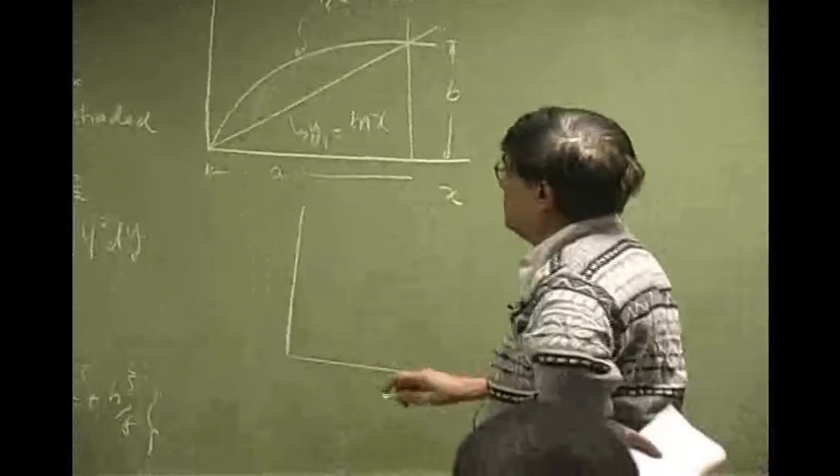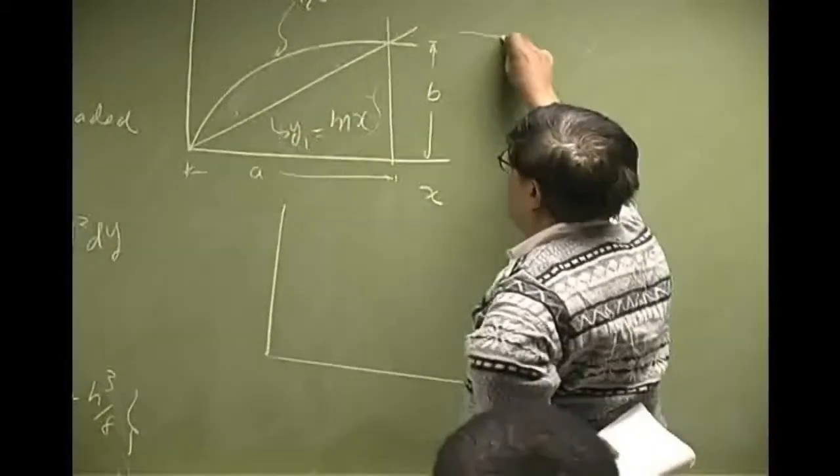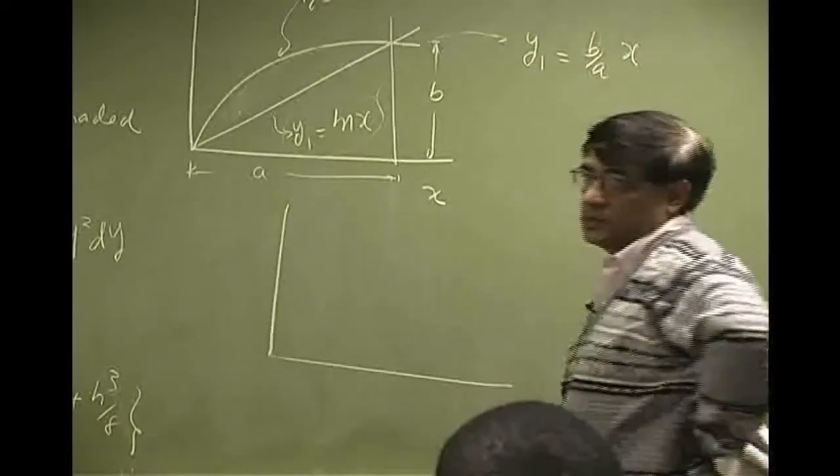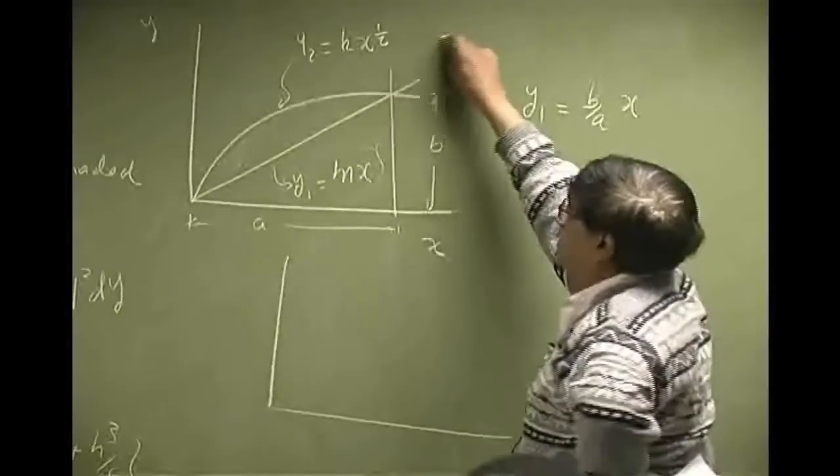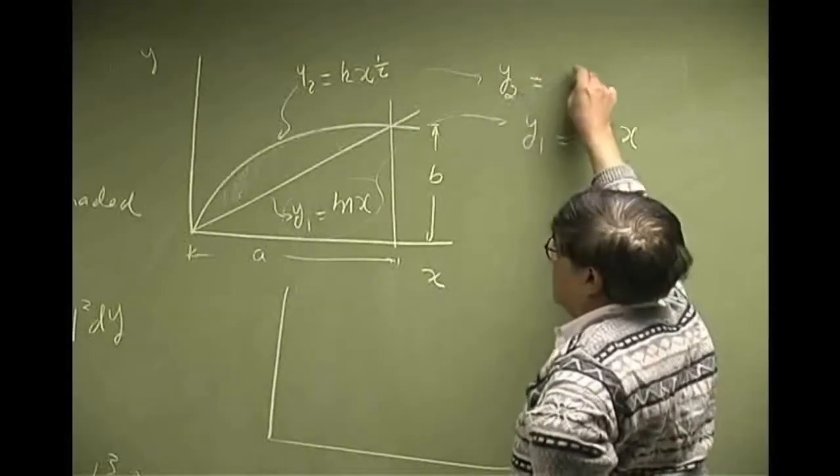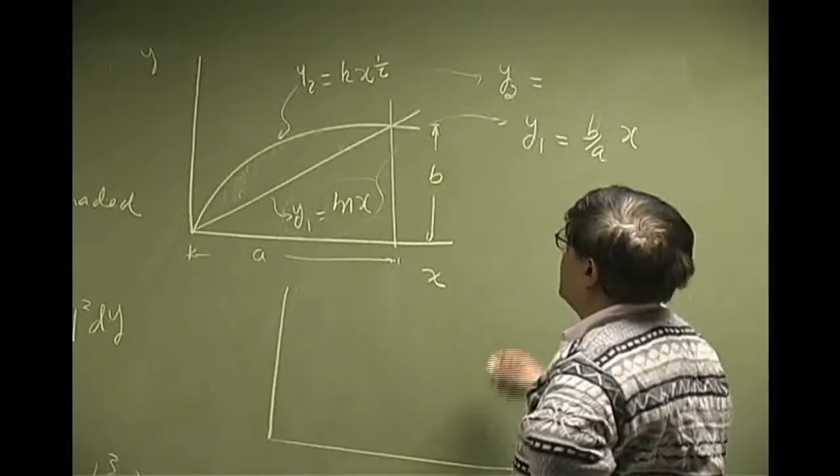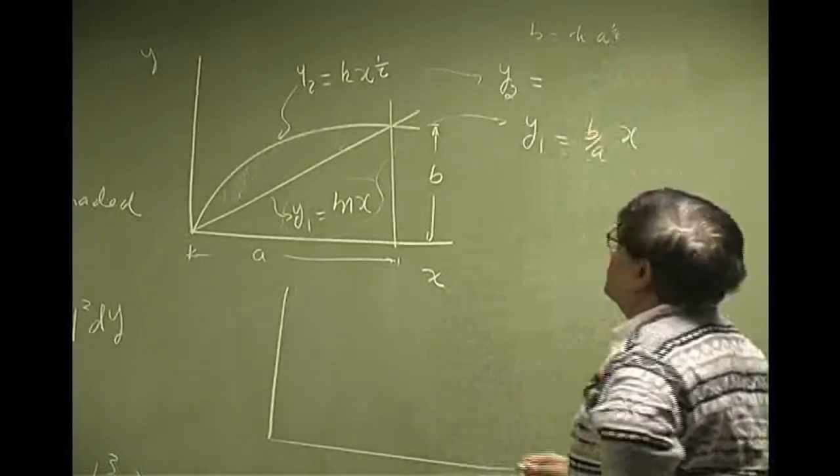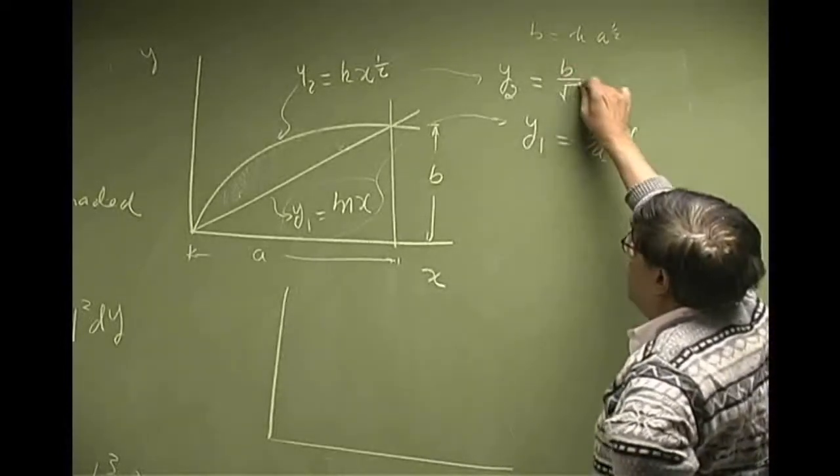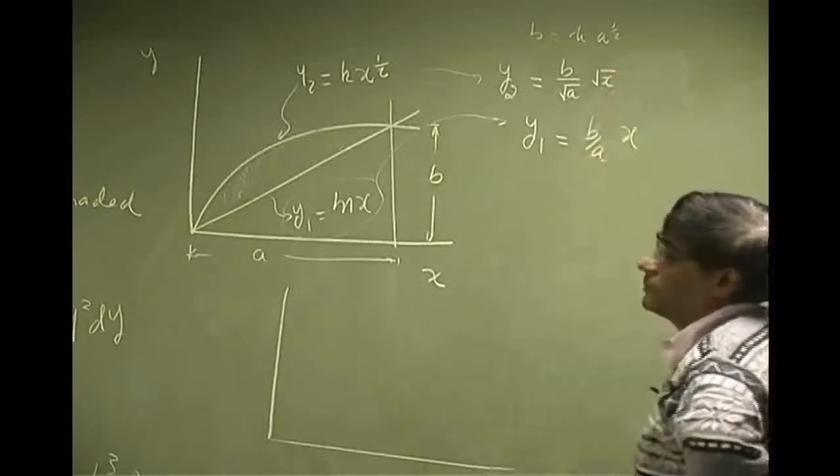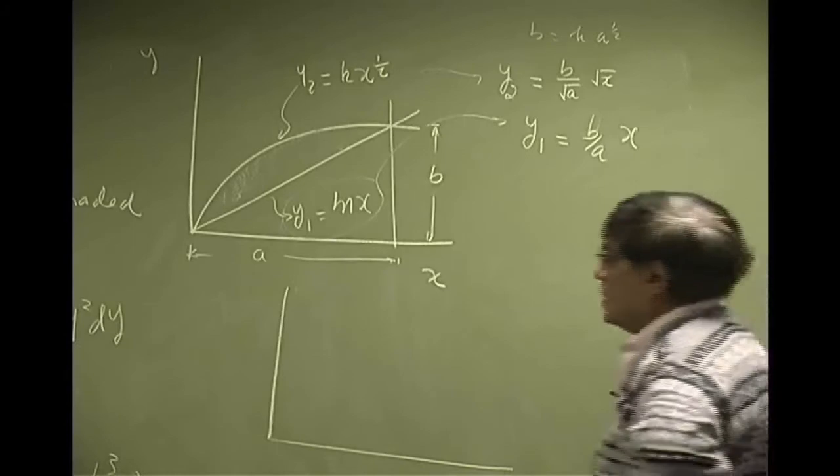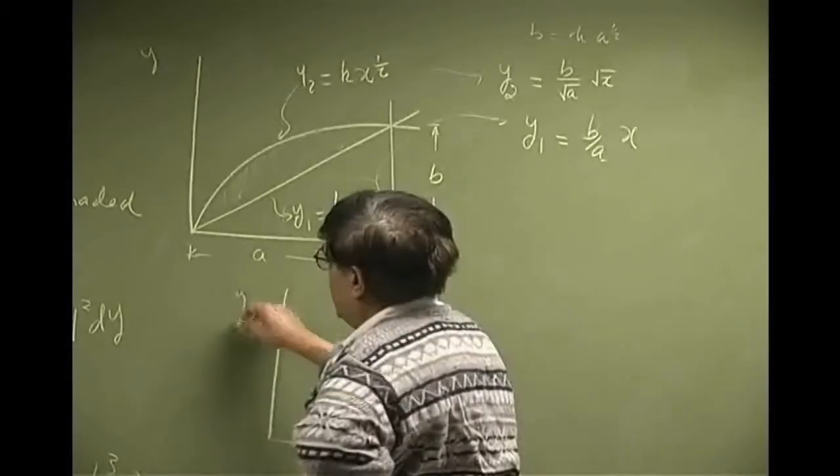Now, let me redraw this. First of all, this one here was changed, and it was b over a times x. And this one was also changed, and that really was b equals to k a to the half, so it will be b over square root a times square root x. So, just to bring both equations within the same parameters, a and b.